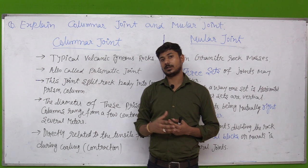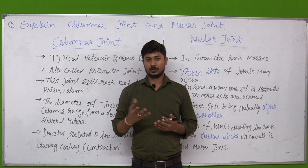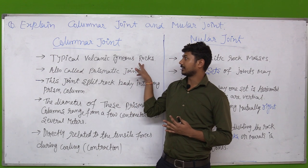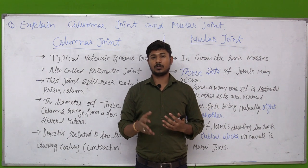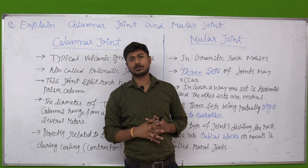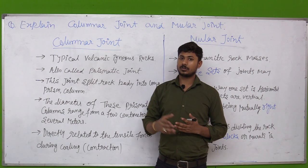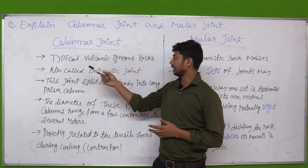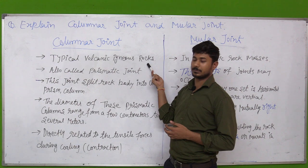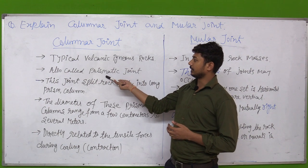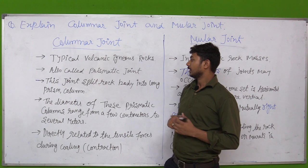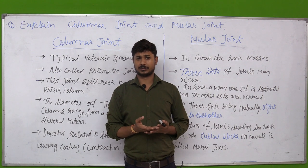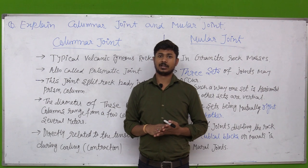First, I will explain what columnar joints are. Columnar joints are formed in volcanic igneous rocks. They are also called prismatic joints. These joints split the rock in the form of a prism, which we call columnar joints.